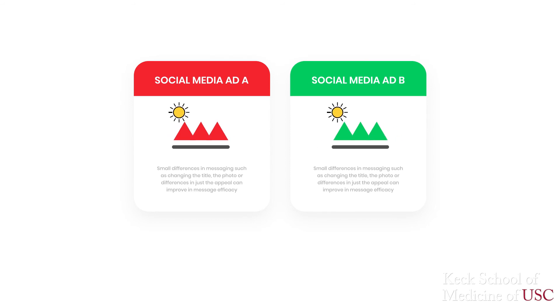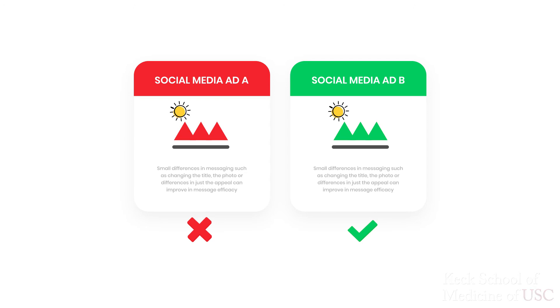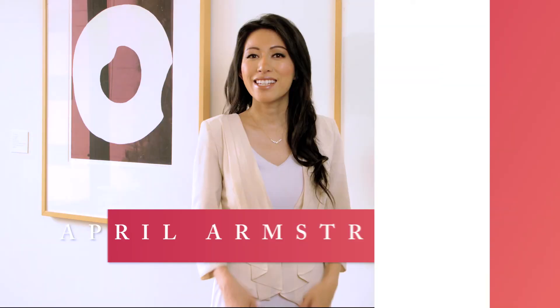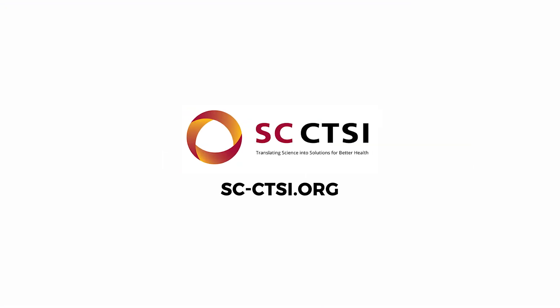It is called A-B testing and refers to the concept that small differences in messaging, such as changing the title, the photo, or differences in simply the appeal, can improve message efficacy. The Southern California Clinical and Translational Science Institute, or SC-CTSI, provides a suite of recruitment services to meet your study's needs. For more information, please visit our website at sc-ctsi.org.